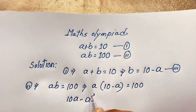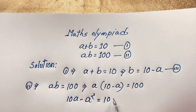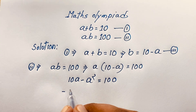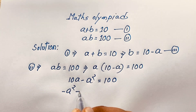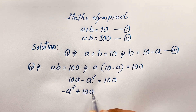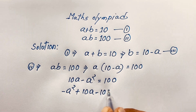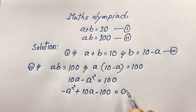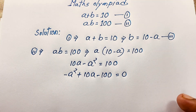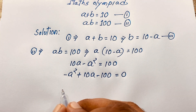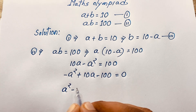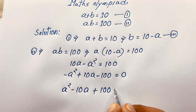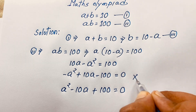Expanding: 10a minus a squared is equal to 100. Rearranging: negative a squared plus 10a minus 100 is equal to 0. I multiply both sides by negative 1, giving us a squared minus 10a plus 100 is equal to 0. This is a nice quadratic equation.